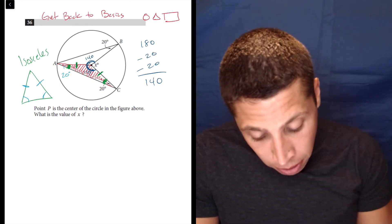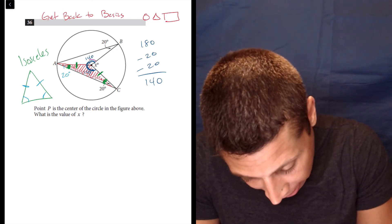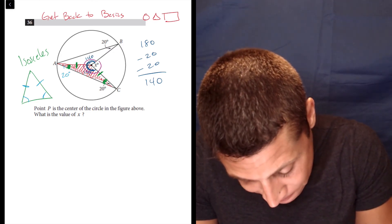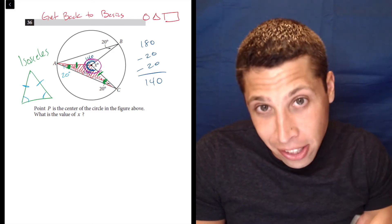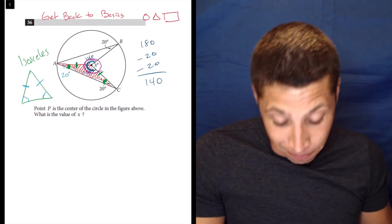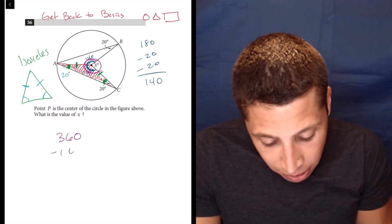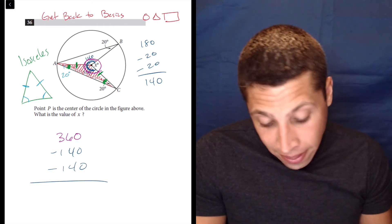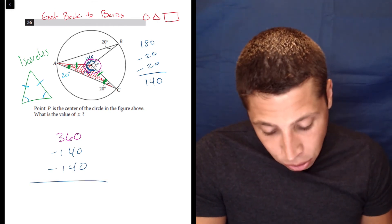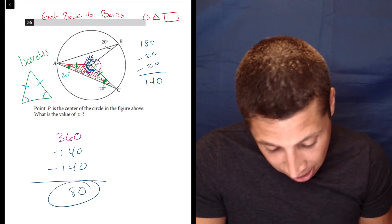So now, big picture, the whole central point includes the x, is its own like mini circle. And circles have 360 degrees, we've got 140 twice, and that's going to leave us with x. So that's 360 minus 280, which is 80, and that's the answer.